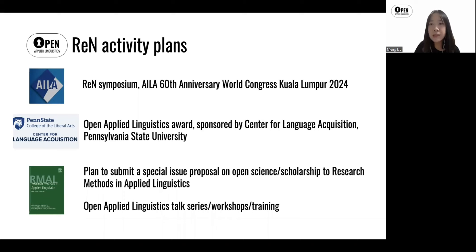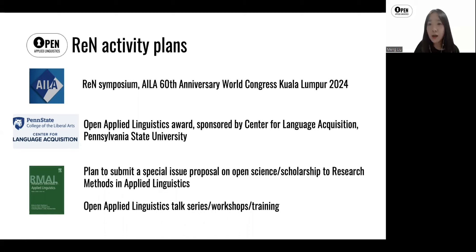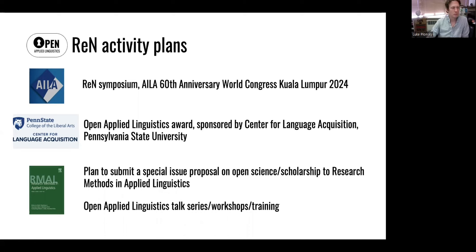We're still in the process of discussing and planning these activities, all still in early stages, but we think it's helpful to announce our intentions. The first is a network symposium at ISLA's 60th Anniversary World Congress in 2024 — one of our obligations as a research network. We'll submit a proposal next year, and if you'd like to contribute, please get in touch. The second activity is that the Center for Language Acquisition at Penn State University has kindly offered to sponsor an Open Applied Linguistics Award to help promote excellent work on open scholarship in applied linguistics.